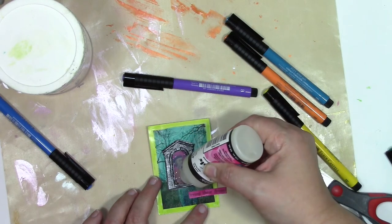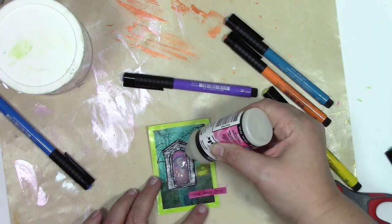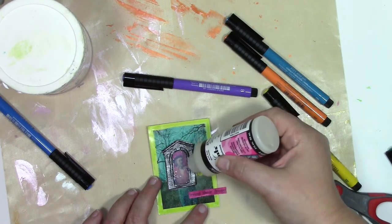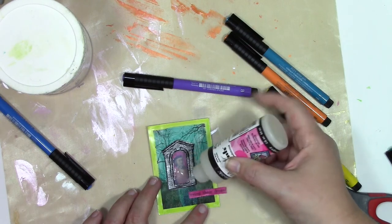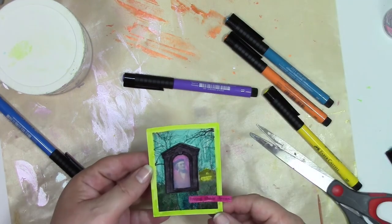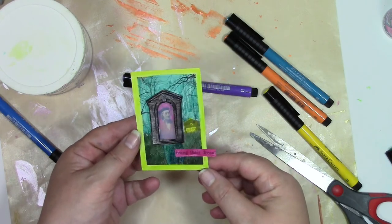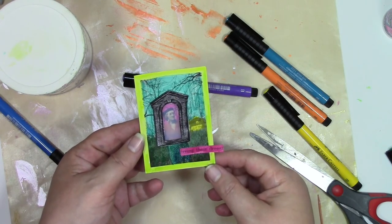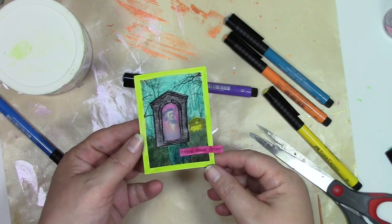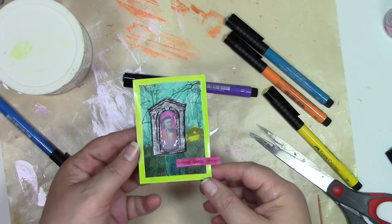So I'm going to completely fill in this bezel with the glossy accents, making sure I completely fill it all the way to the edges. That way it looks like I've got liquid glass in there. So here's what it looks like as it's in the process of drying. It's cloudy now, but once it's dry, it will be completely clear and she will shine inside her shrink film bezel.